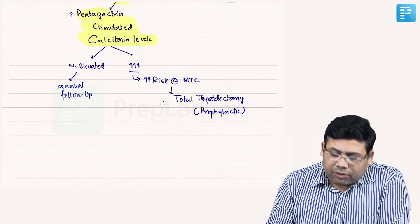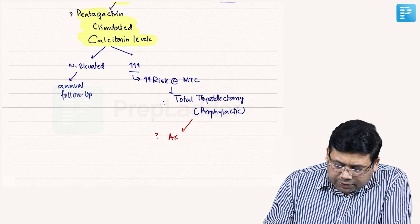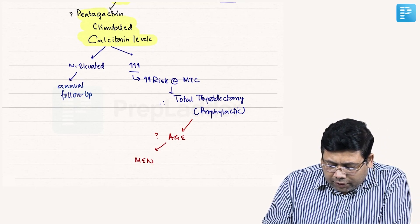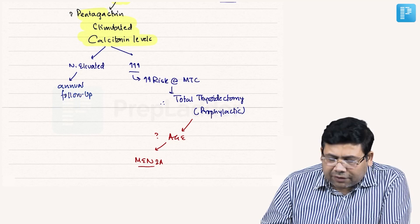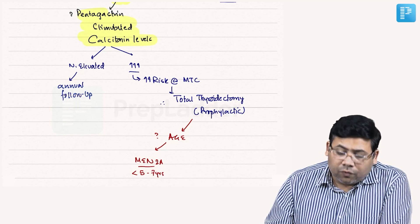At what age? For MEN2A, the cancer usually happens after seven to eight years, therefore before five to seven years you go for it.